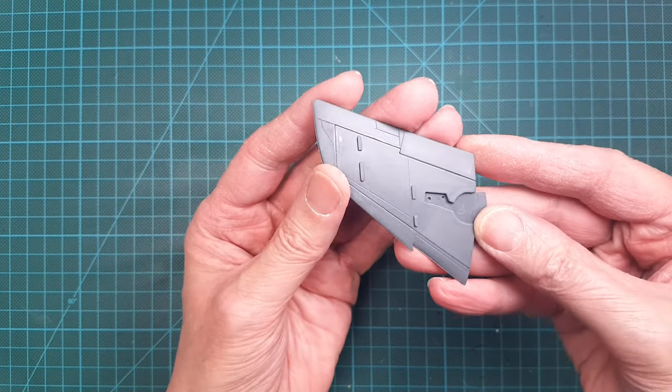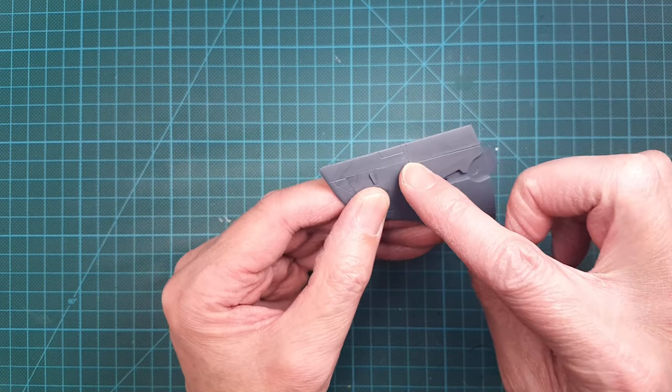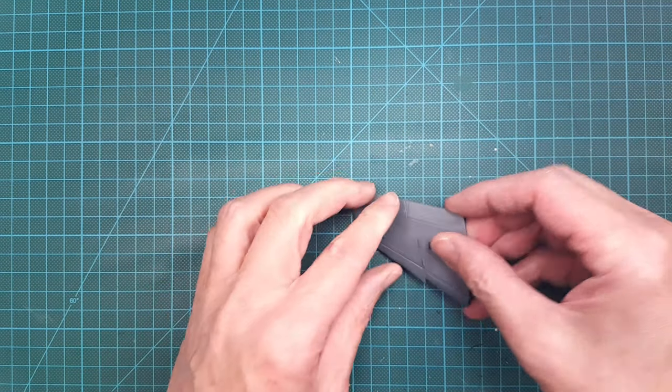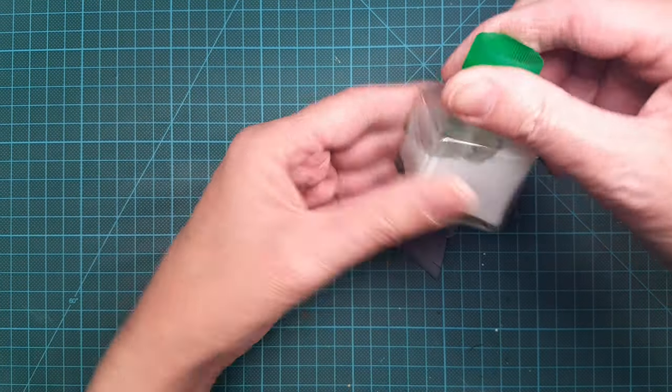So, I will apply the filler on the panel line for the inner flap in this example. That way we can easily compare what it looks like with and without filler.